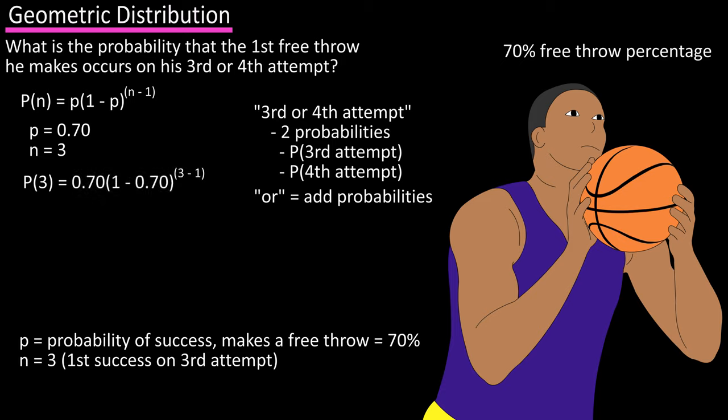Now we can plug and calculate. Probability of three equals 0.70 times one minus 0.70 raised to the three minus one. Do the math, and we get 0.063, or 6.3%.